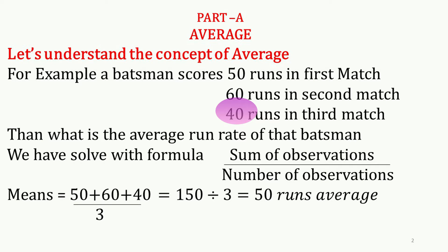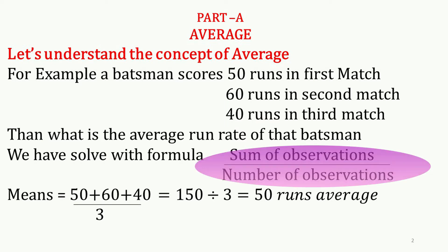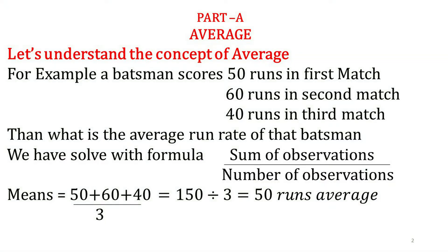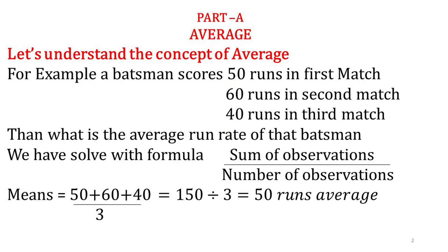We will use the formula: sum of observations divided by number of observations. Sum of observations means how many runs are scored across matches. Suppose a batsman plays three innings scoring 50, 60, and 40 runs. The average of the batsman will be 50.